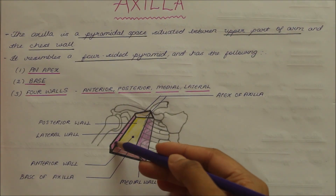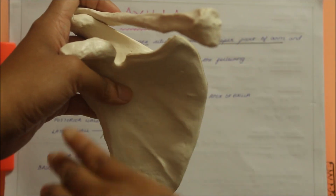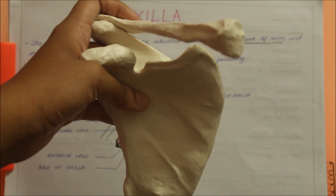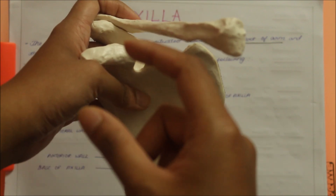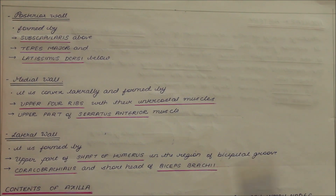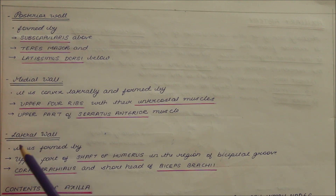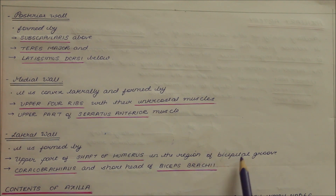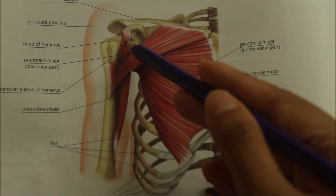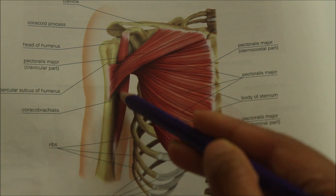Finally, let us look at the features of the lateral wall. The lateral wall is formed by the upper part of the shaft of the humerus in the region of the bicipital groove, the coracobrachialis muscle, and the short head of the biceps brachii muscle. This is the coracobrachialis muscle.